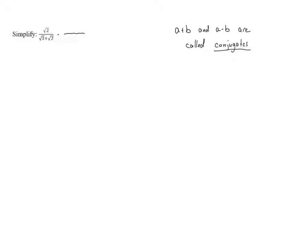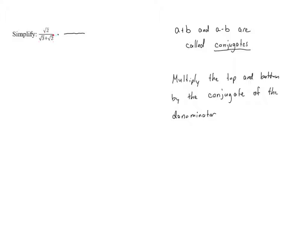In a problem like this, the step we need to do is multiply the top and bottom by the same thing — specifically, the conjugate of the denominator. In this case, the denominator is the square root of 3 plus the square root of 2, so we need to multiply by the square root of 3 minus the square root of 2, doing the same thing to both top and bottom.